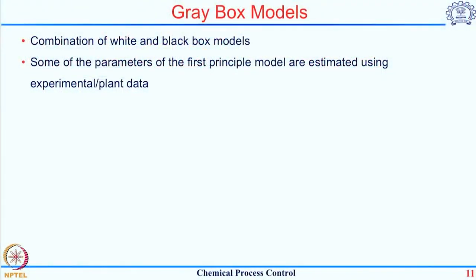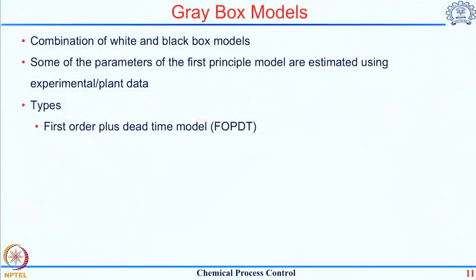This brings us to the last type of dynamic model — a middle ground between the empirical model, known as the black box model, and the theoretical model, known as the white box model. These are called gray box models. They are a combination of white and black box approaches: we use some parameters from the first principle model — typically the form of the input-output relationship comes from fundamental modeling — while the parameters of the system are obtained using experiments or empirical data. A very commonly used gray box model from a control point of view is the first order plus dead time process.